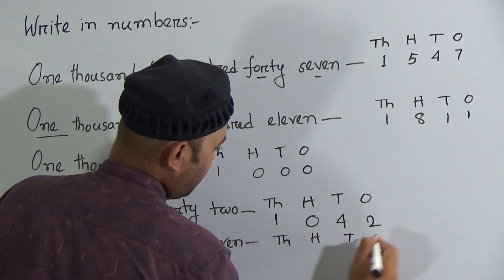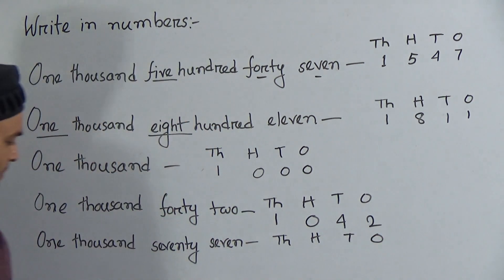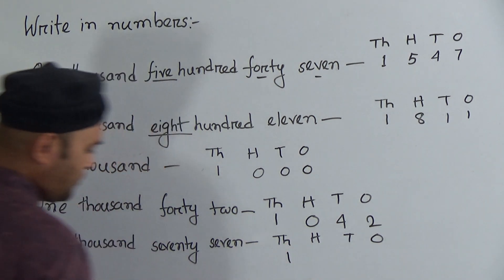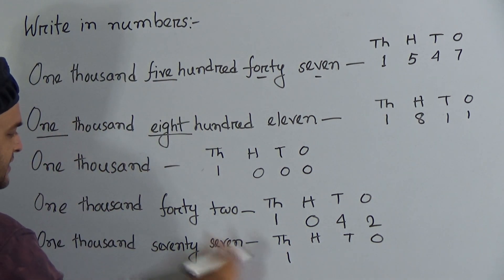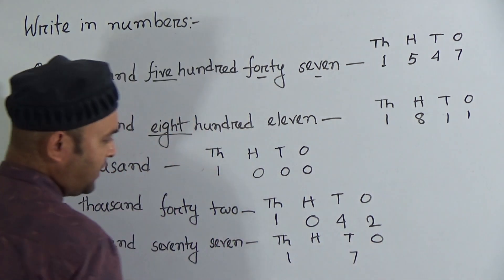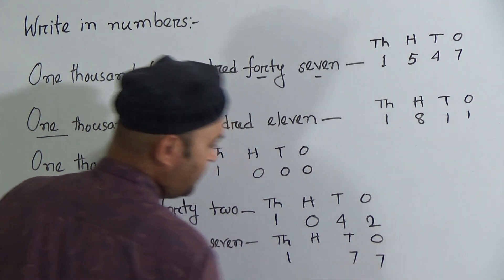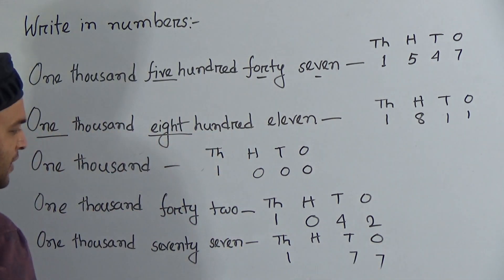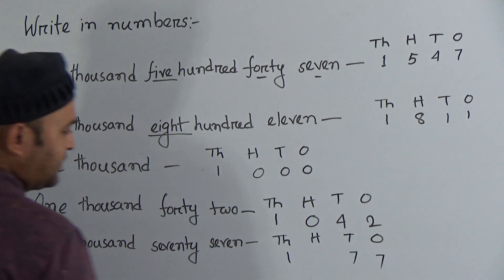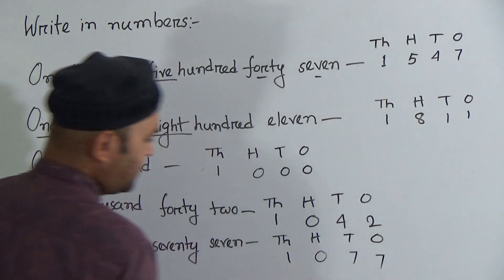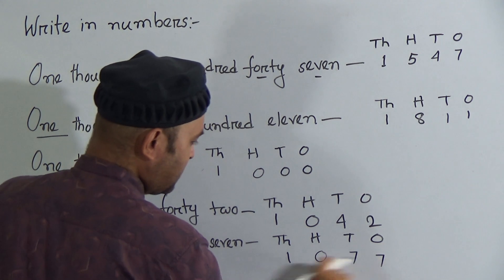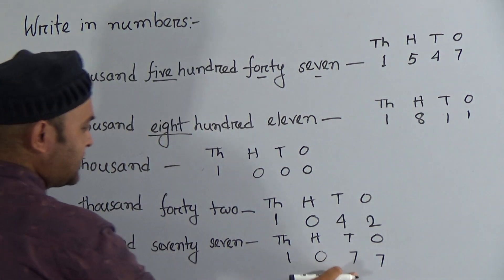The last one: 1077. We have thousands, hundreds, tens, and ones places. One thousand — write one in the thousands place. Seventy-seven — write seven in the tens place and seven in the ones place. The hundreds place is blank, so write zero there. So one zero seven seven is called 1077.